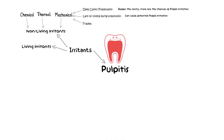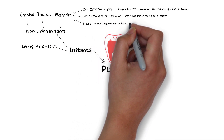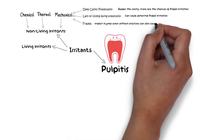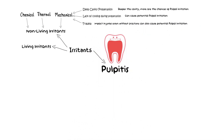Impact injuries without any tooth fracture can also result in pulpal damage. Whether a pulp can recover successfully from such injuries depends on many factors such as apical closure and the type of injury. Chemical irritants such as dentinal cleansing substances or certain materials placed during temporary or permanent restoration can also cause potential irritation to the pulp and sometimes elicit an inflammatory response.